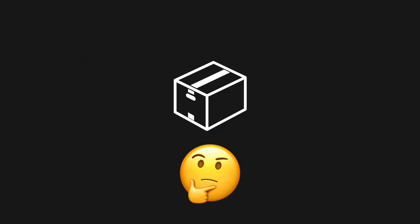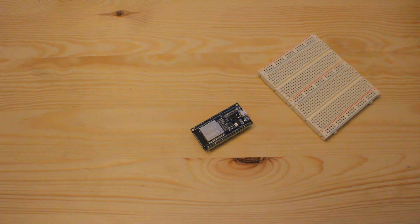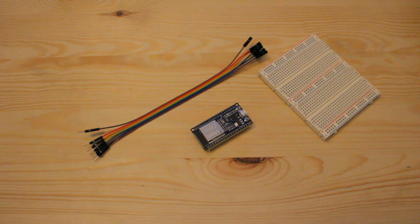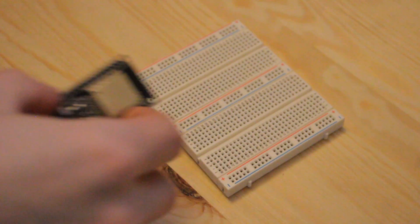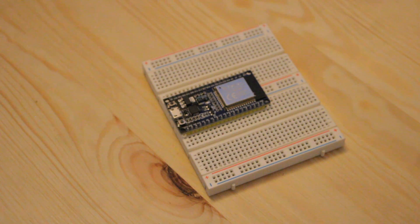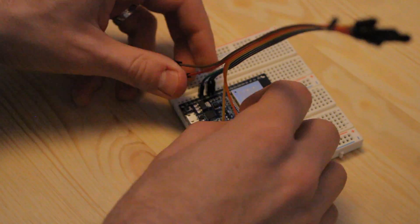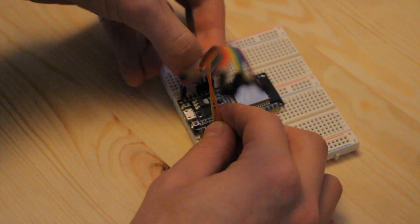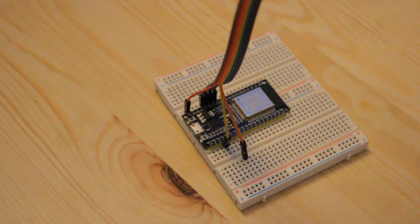Got your device? Prepare your ESP32, a breadboard, six equally long male-to-female jumper cables, a micro-USB cable, and your ESP-PROG. Free up pins 12 to 15 on your ESP32 — those are directly connected to the chip's JTAG lines on the board. Connect these four data lines according to this image and table.